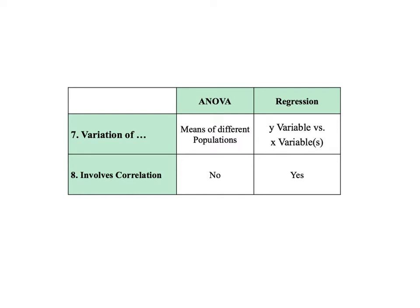For ANOVA, there is no question of varying together, because the values of the X variable, being a categorical variable, are names — like drug A, drug B, and drug C. It is meaningless to talk about names increasing or decreasing, so there can be no correlation calculated between X and Y in ANOVA.